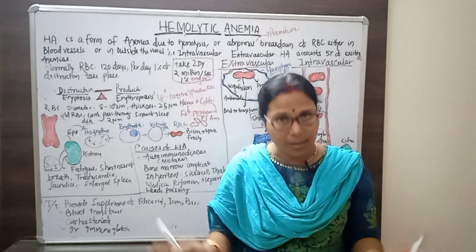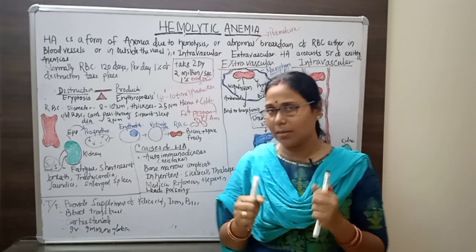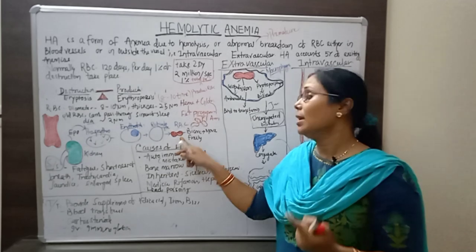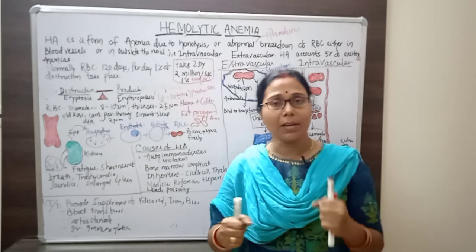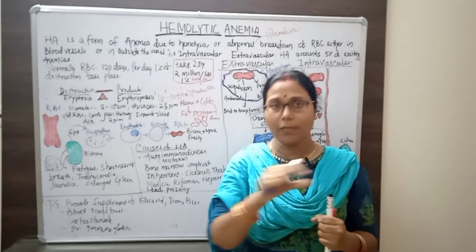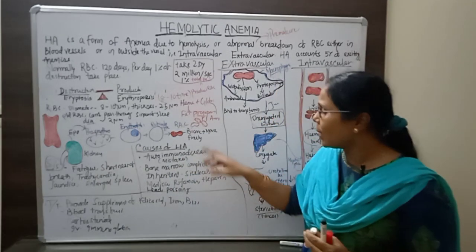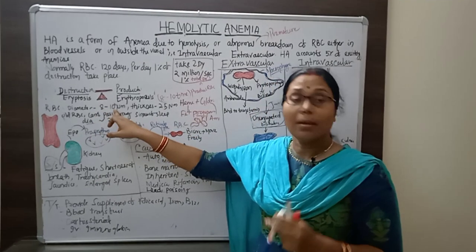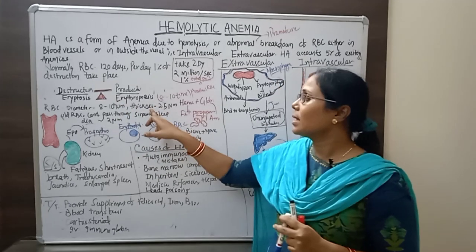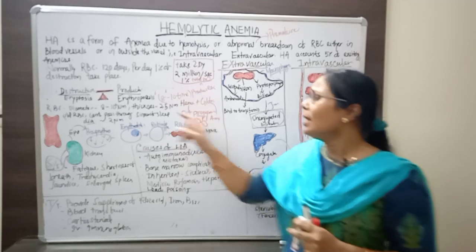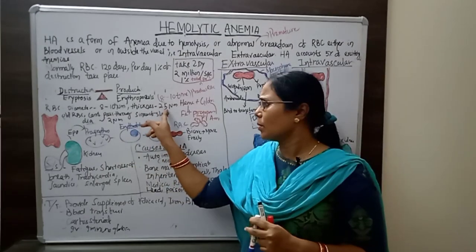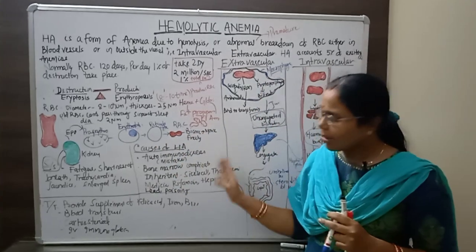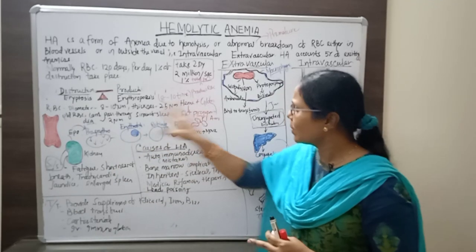The RBC has a biconcave shape, which gives it a greater surface area to bind hemoglobin. Its flexible structure allows it to move through narrow capillary diameters. The RBC has a diameter of 8 to 10 microns and a thickness of 2.5 microns. Due to this flexible, biconcave structure, it can travel throughout the body's circulatory system.